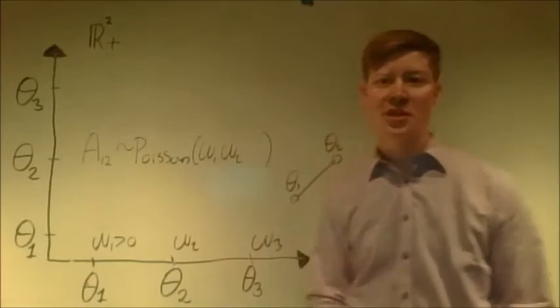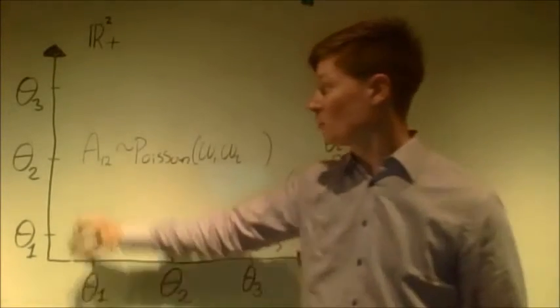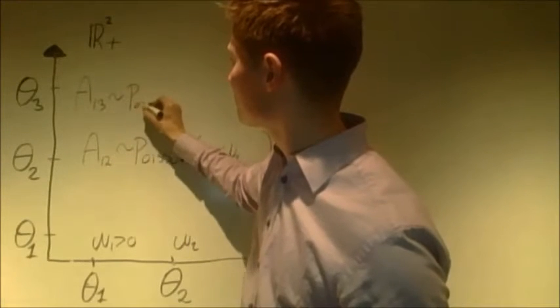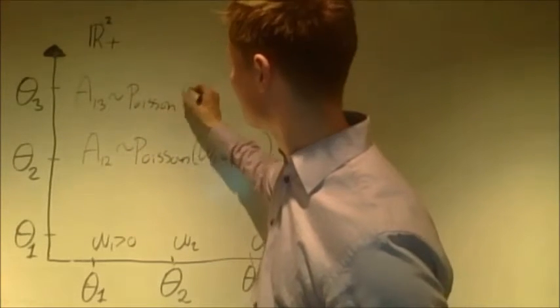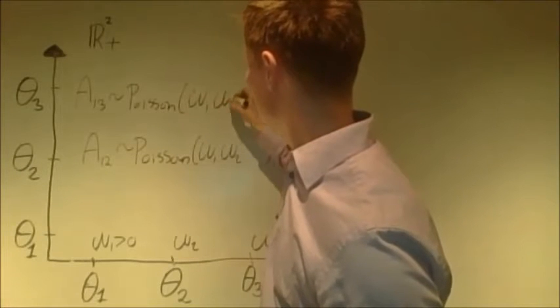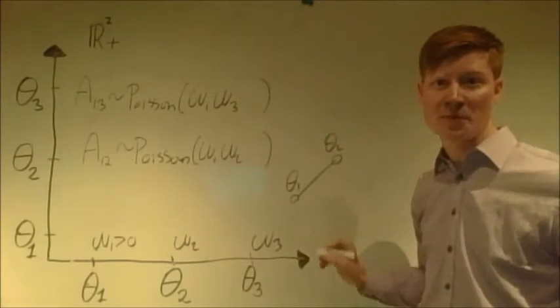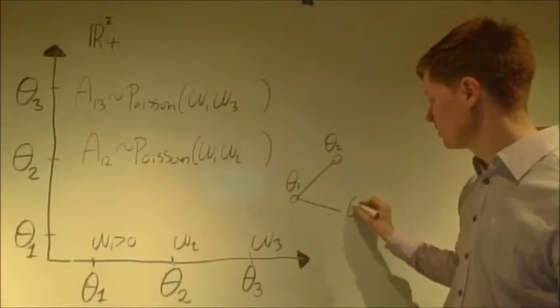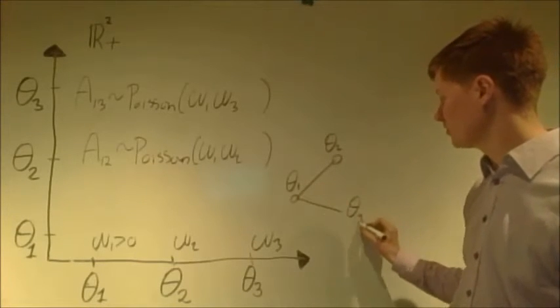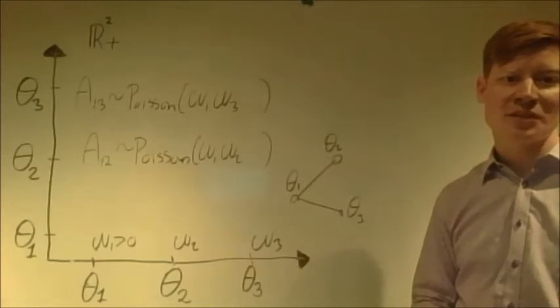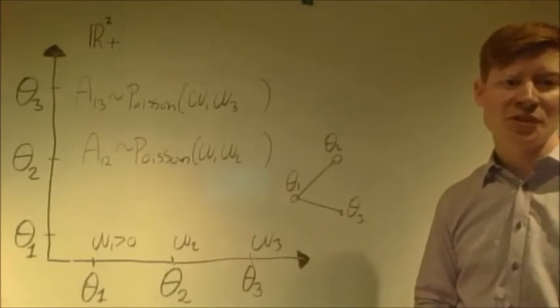Similar for all pairs of potential vertices. For instance, theta1 and theta3, the number of edges would be A, which would be Poisson distributed with rate w1, w3. And if that number is positive, there's going to be an edge between theta1 and theta3 in the actual network. This construction was actually proposed by Francis Cron and Emily Fox about two years ago.